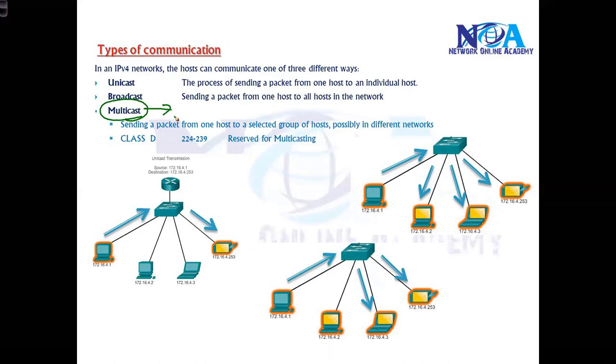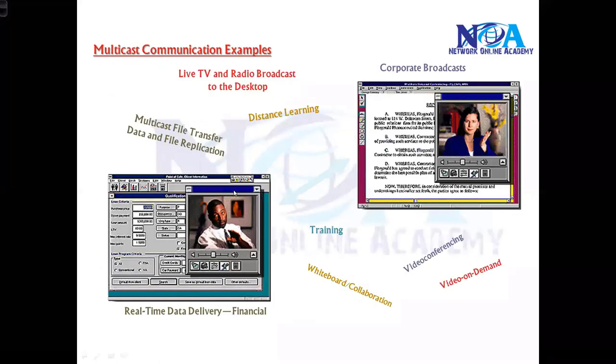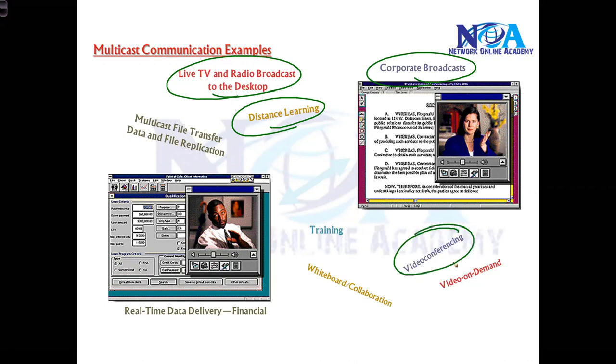Similarly, there are scenarios in the network where you may want to send specific traffic or packets to selected individuals. In production networks there are different types of applications like corporate broadcast messages, online distance learning, live TV, radio broadcasts on your computer, video conferencing applications, video-on-demand applications, or websites.